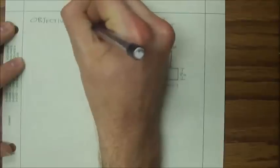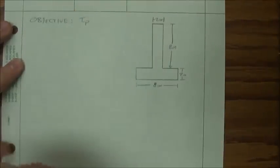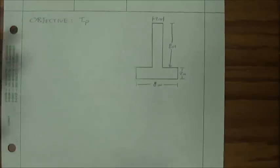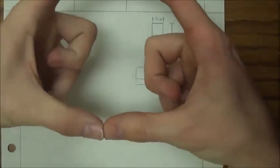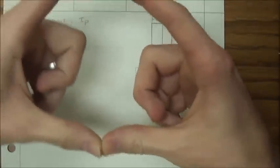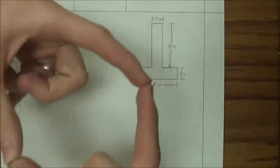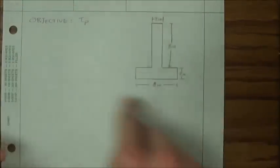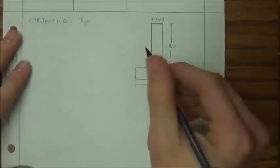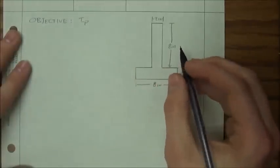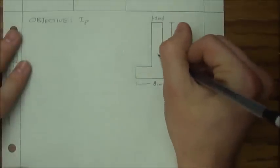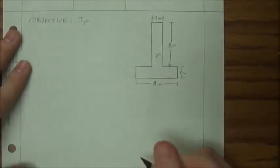Our objective here is simply to find the polar moment of inertia, IP. IP has to go through a certain point. For regular moments of inertia, if this was a square, you have IX going through the X-axis, IY going the Y direction, and IP is really going through the Z-axis. We're talking about rotation — finding how much this object resists rotation. The problem states we're trying to find it through the centroid, so we have to find where the centroid is first.